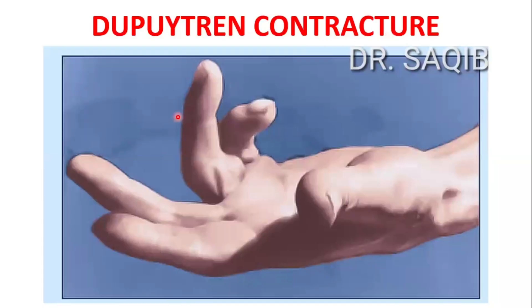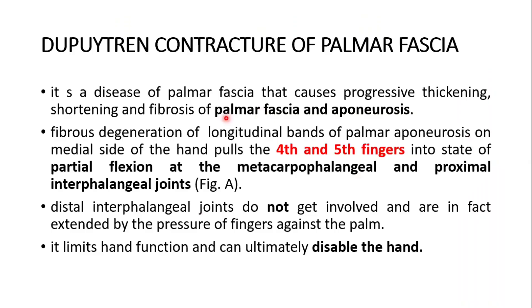Hi, I am Dr. Sakhir Mansour and today I will discuss with you Dupuytren's contracture. This is a disease in which the medial two fingers get partially flexed at the metacarpophalangeal and the first interphalangeal joint. So, let's discuss in detail.